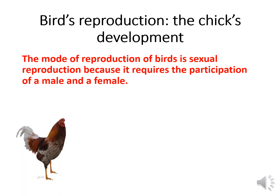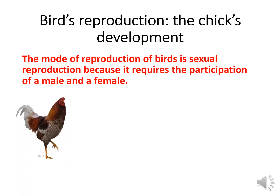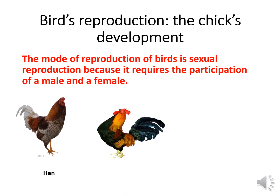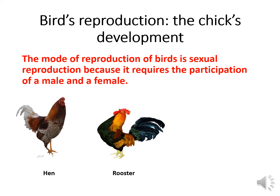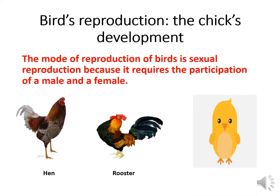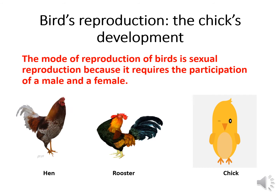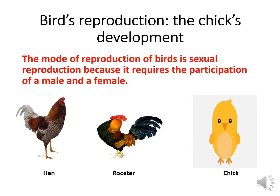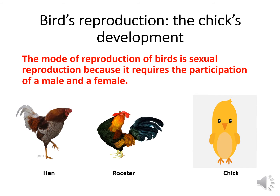In chick development, the female is the hen, the male is the rooster, and the young is the chick. The hen and the rooster participate together to produce a chick.